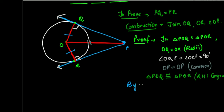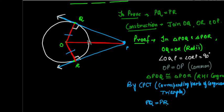As a result, by the concept of CPCT - which stands for Corresponding Parts of Congruent Triangles - corresponding parts of congruent triangles will always be equal. So by CPCT, we can say that PQ is equal to PR. And that is the proof.